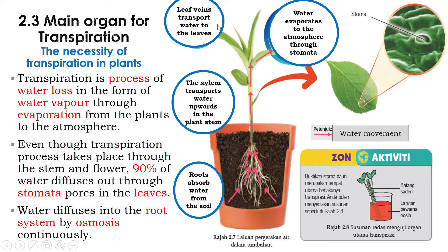Water will diffuse into the root, so the uptake of water by a plant is through its roots. The roots absorb water together with dissolved mineral salts. The red arrow here indicates the water movement — it will travel up along the stem through the xylem vessels, which transport water and mineral salts, all the way to the leaves where the stomata are located.